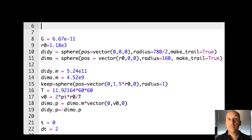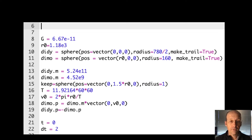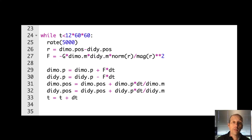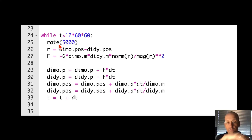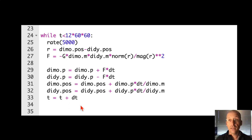I break this into small time steps — 2 seconds is a small time interval when you're talking about an 11-hour orbit. Here's the main loop: it runs for 12 hours. The rate of 5,000 tells it how many calculations to do per second so I don't have to wait 11 hours. I calculate the vector R between the two bodies, calculate the gravitational force, and then update the momentum and position of both asteroids to get the following motion.